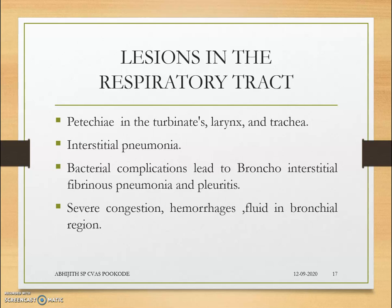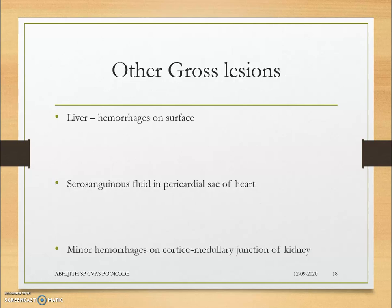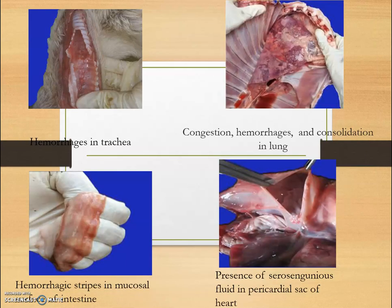The respiratory tract shows bacterial and viral interstitial pneumonia, with bronchopneumonia causing hemorrhage and fluid deposits. In other gross lesions, the liver has hemorrhages on the surface. Serosanguinous fluid is found in the pericardial sac due to hydropericardium. Minor hemorrhages occur at the corticomedullary junction of the kidney, and small antigen-antibody complex deposits form urate crystals on the ureter. Hemorrhages are present in the trachea, with consolidation in the lungs due to bronchopneumonia and severe congestion in the bronchus. Zebra stripes in the mucosa are due to hemorrhagic muscular folds and streaks of congestion.